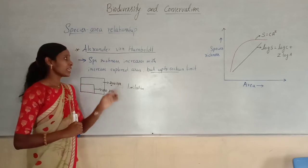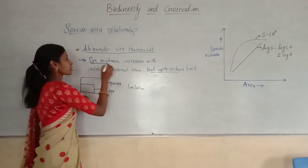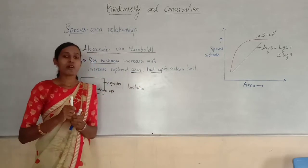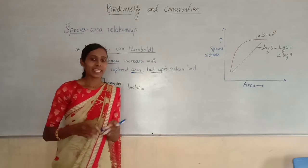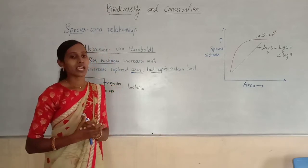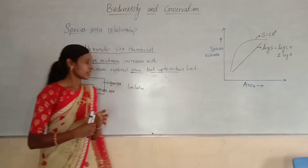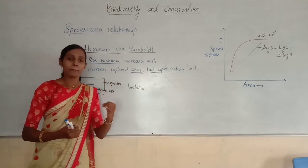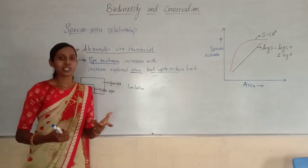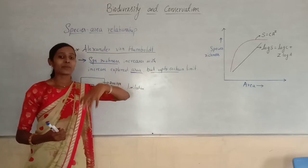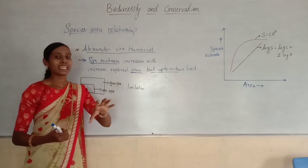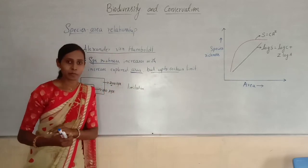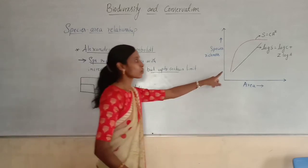The relationship between species richness and area for a wide variety of taxa — for example, angiospermic plants, birds, bats, aquatic fishes, etc. — when we relate species richness and area for those wide varieties of taxa, it turns out to be a rectangular hyperbola.